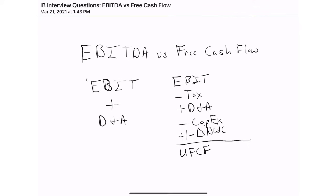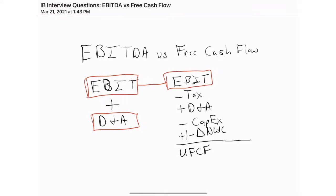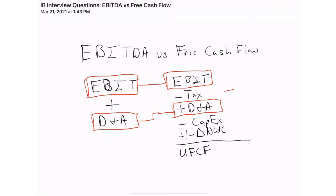Now let's draw comparisons from EBITDA to unlevered free cash flow. When we map EBITDA and D&A across to the FCF formula, we can see exactly what's missing. In particular, EBITDA doesn't incorporate tax — so free cash flow is an after-tax metric — but what people really focus on is that EBITDA excludes both capital expenditures, our reinvestments in the business, as well as changes in net working capital, which represent cash tied up in the business in a given period. For example, if we acquired inventory, that would be a use of cash — a cash outflow — and we'd want to reflect that.